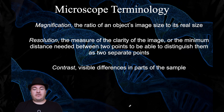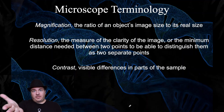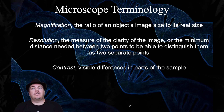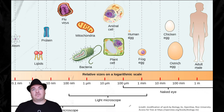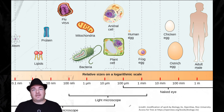Contrast is the visible differences in the parts of the sample — much like adjusting the contrast on your computer monitor, making the brights brighter and the darks darker. The bigger the difference between brights and darks, that's contrast. We use a light microscope to see things that are too small to see with our eyes, for example cells.